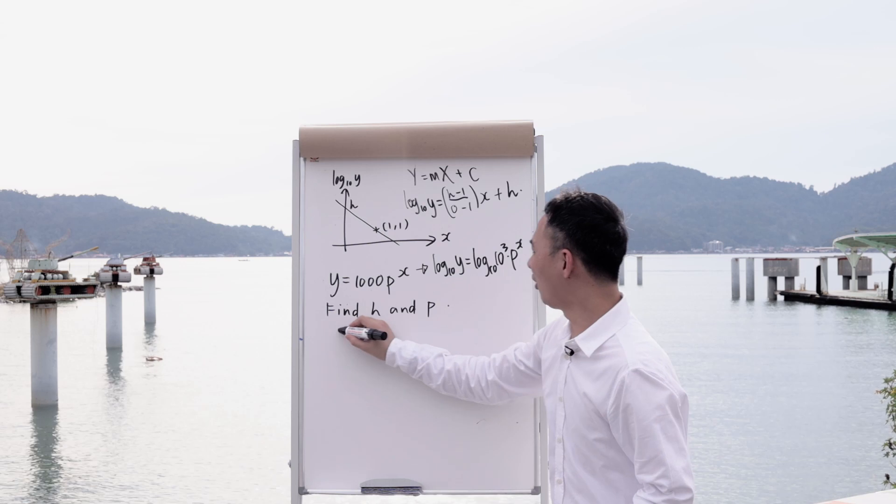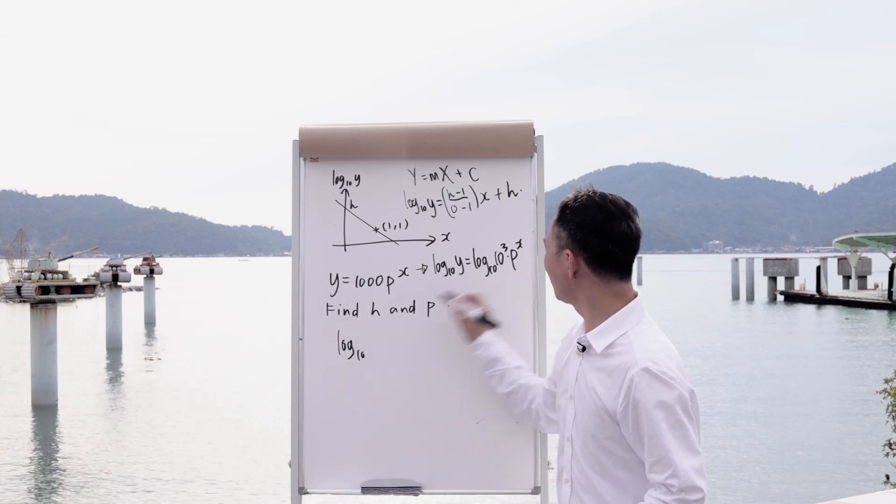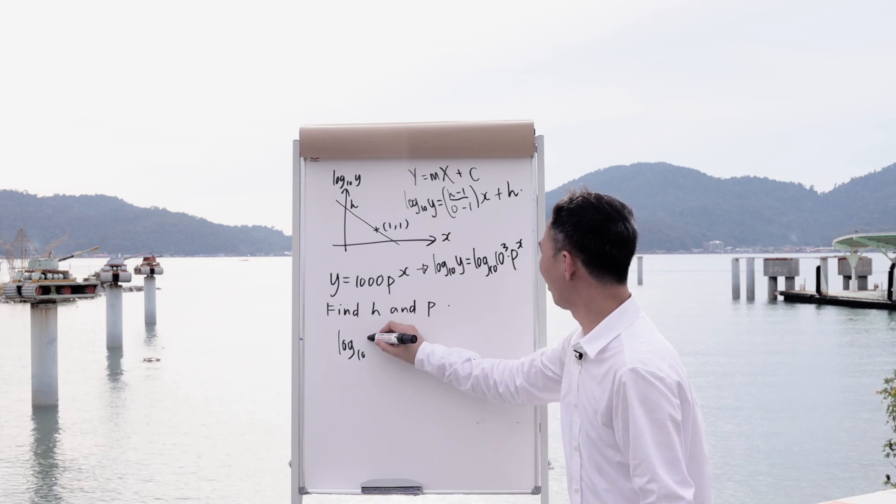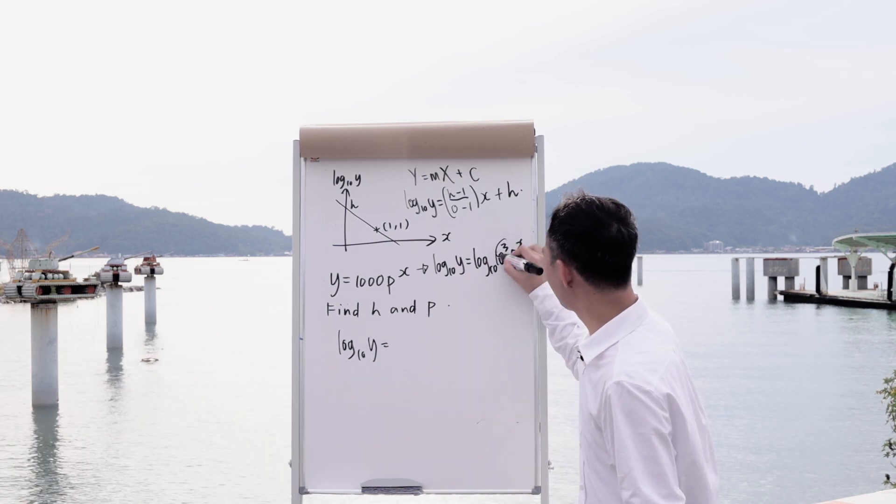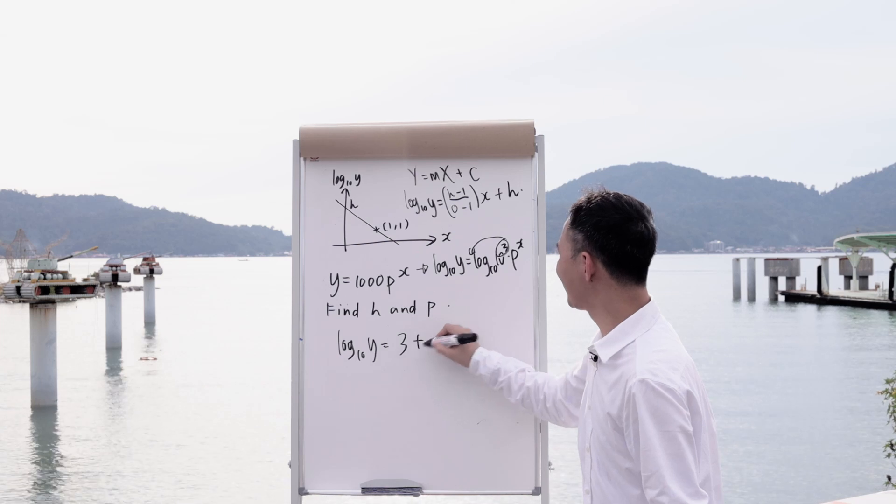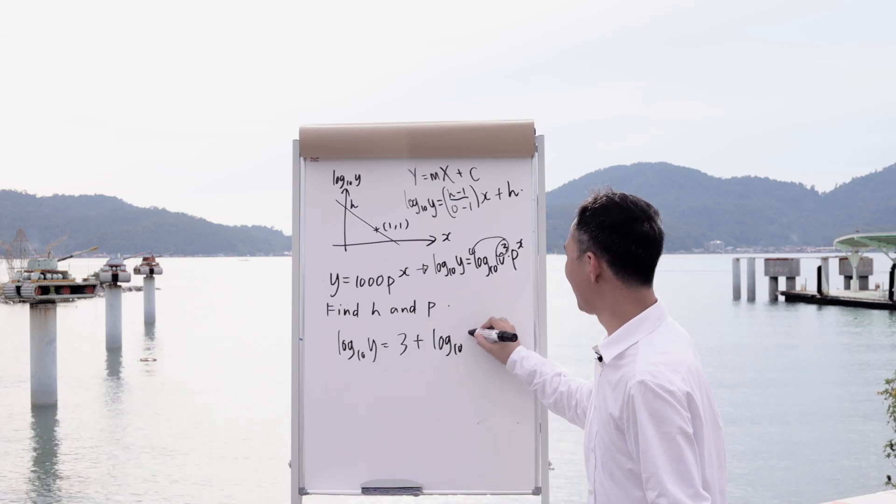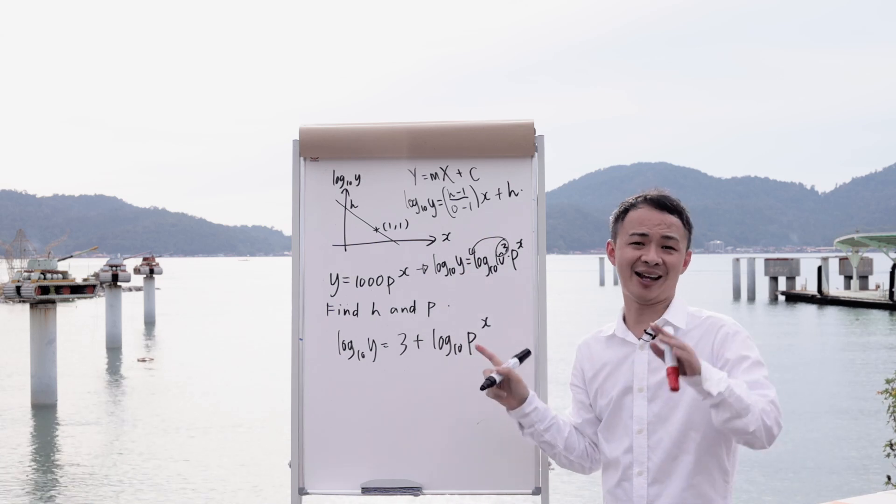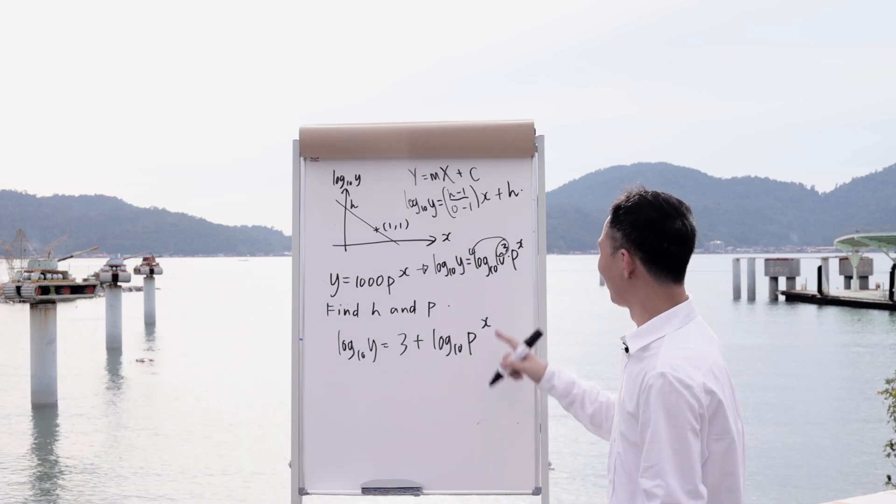And then what the log rule tells us, multiply here, we can expand it, it will become plus. So log 10y will equal to, this 3 I moved to the front will be 3 plus log 10px. Because this 3 I moved to the front already, log 10 of 10 will actually equal to 1.